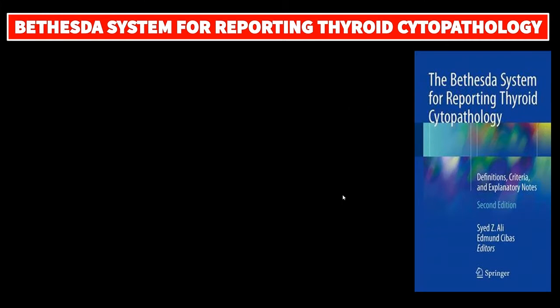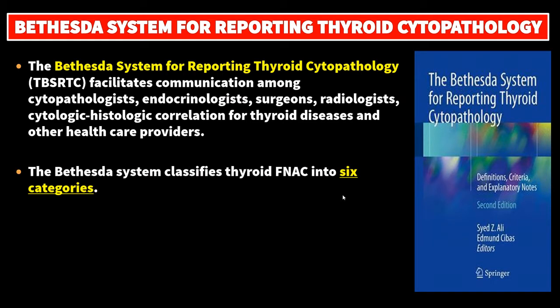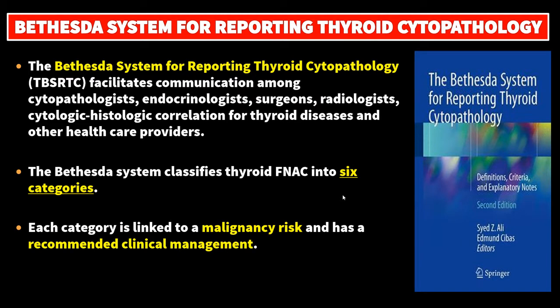The Bethesda System for Reporting Thyroid Cytopathology facilitates communication among cytopathologists, endocrinologists, surgeons, radiologists, and other health care providers for cytologic and histologic correlations for thyroid diseases. The Bethesda System classifies thyroid FNA into six categories. It is very important to know that each category is linked to a malignancy risk and has a recommended clinical management.